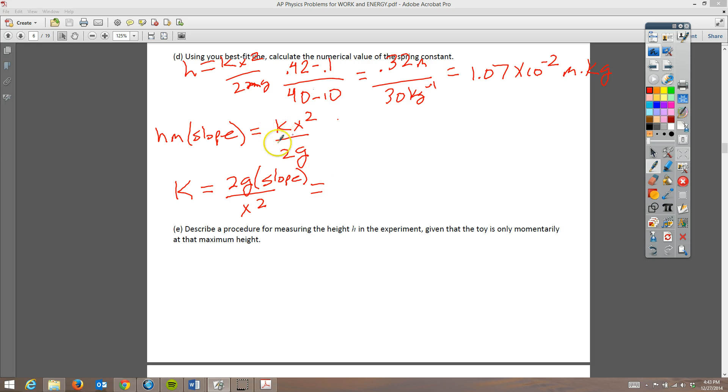So remember here, we're solving for k. Slope's already on the top. We multiply both sides by 2g. Divide by x squared. We end up with this equation. So we're going to do 2 times 10 times our slope, which is 1.07 times 10 to the negative 2. And then we're going to divide by x squared. And x is 0.02, is what they told us the stretch was squared. And when we're done, we're going to end up with 535 newtons per meter.